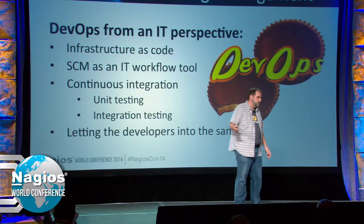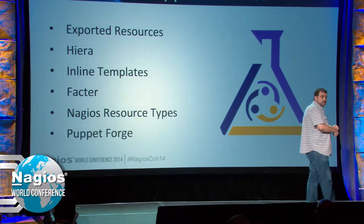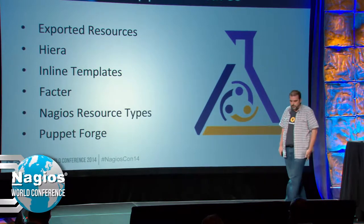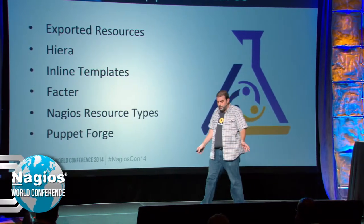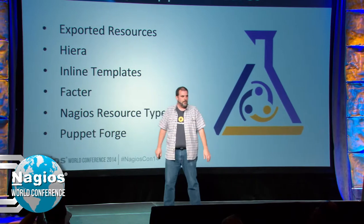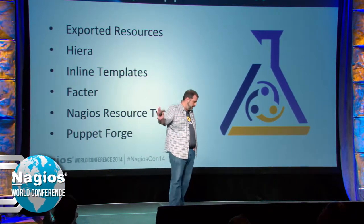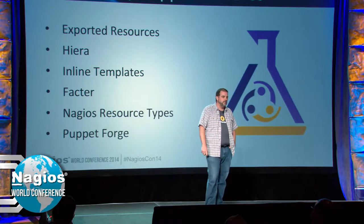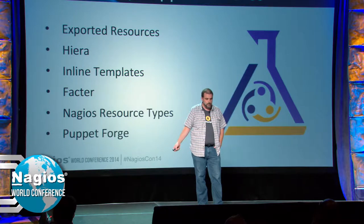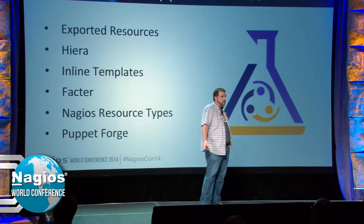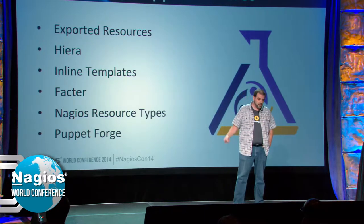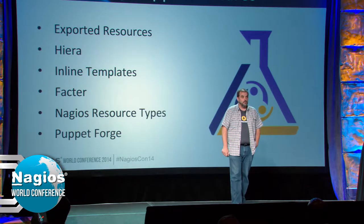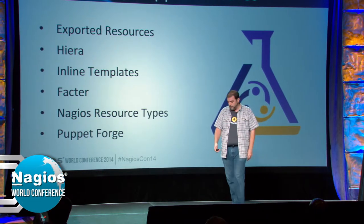If you're using Chef, Ansible, Salt, or CFEngine, those are all great tools. We use Puppet. For Nagios management specifically, there are a few key Puppet features that make it easy: exported resources, Hiera, inline templates, Facter, native Nagios resource types, and the Puppet Forge.